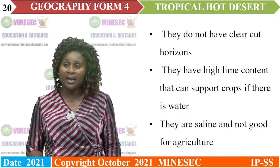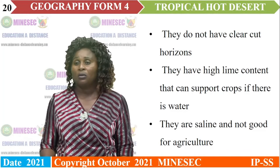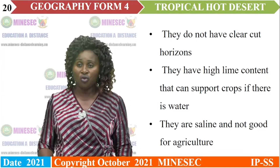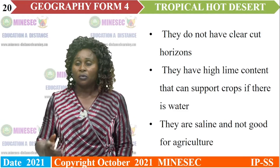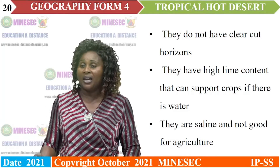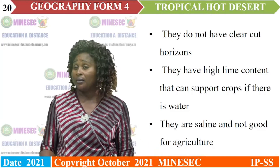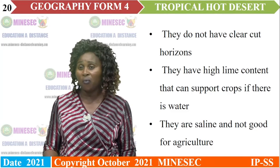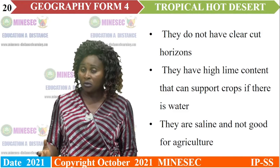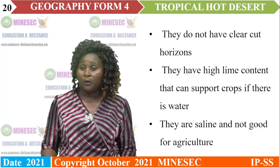Desert soils have a high lime content that can support crops, but the problem is the absence of water — the only medium through which nutrients move from soil to plants. The deserts are dry with little or no rainfall, so the soils are fertile but cannot hold crops due to lack of water. The soils are also saline, containing salt, which is alkaline and renders soil quality poor when in excess.